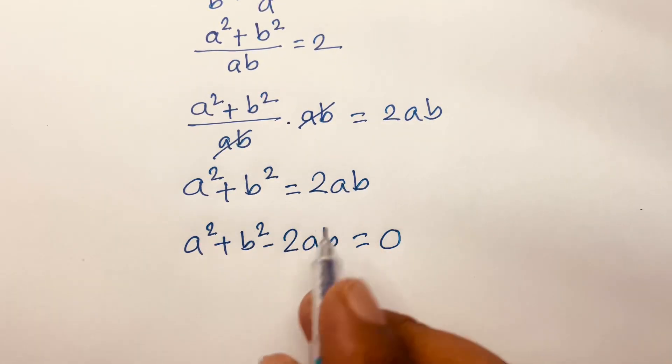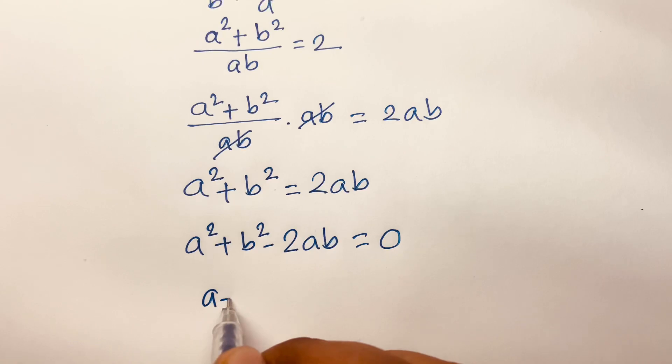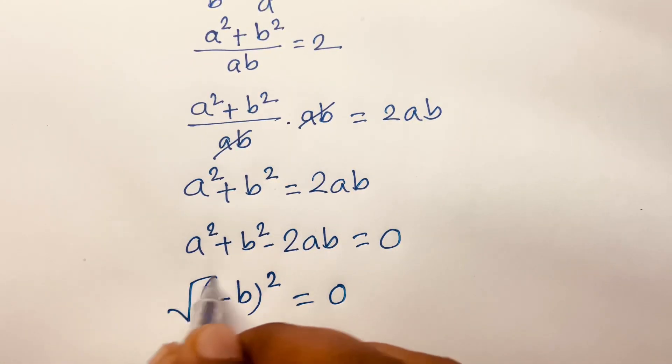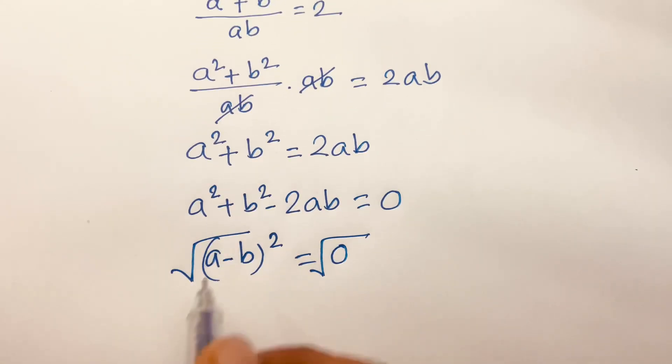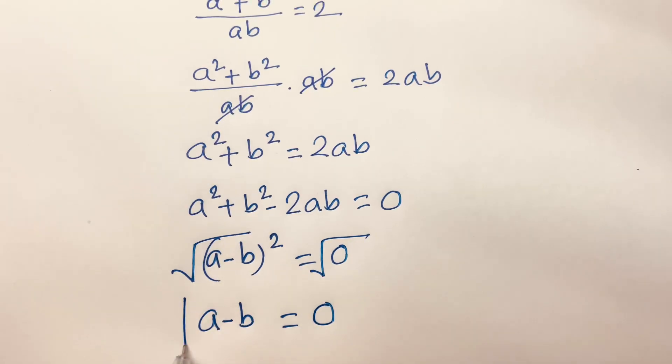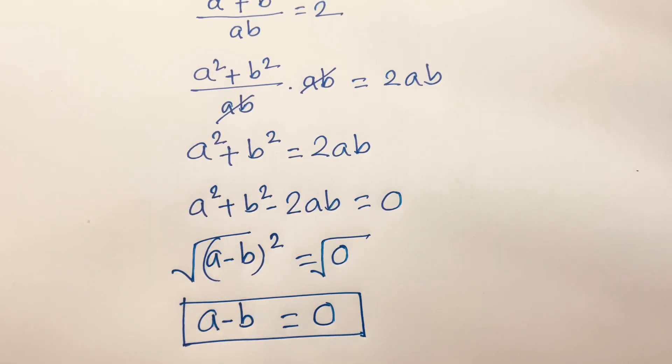is (a - b)² = 0. Then I take the square root of both sides, so the square cancels and a - b = 0. This is our final answer.